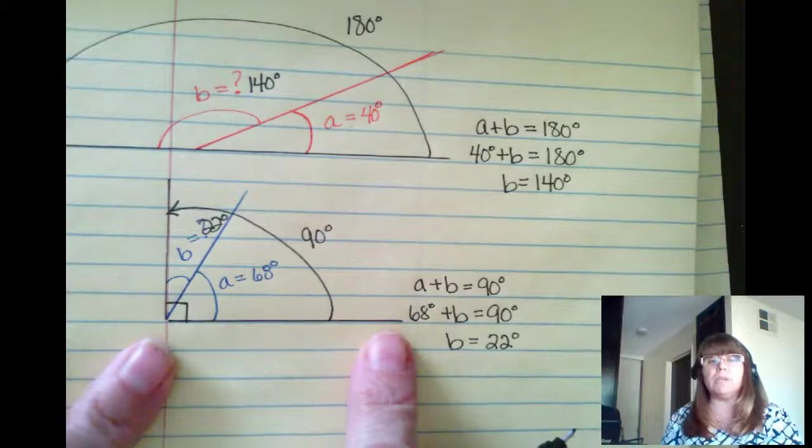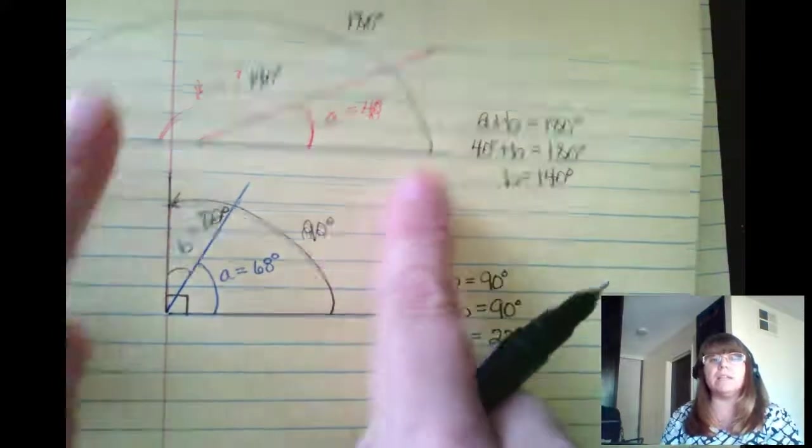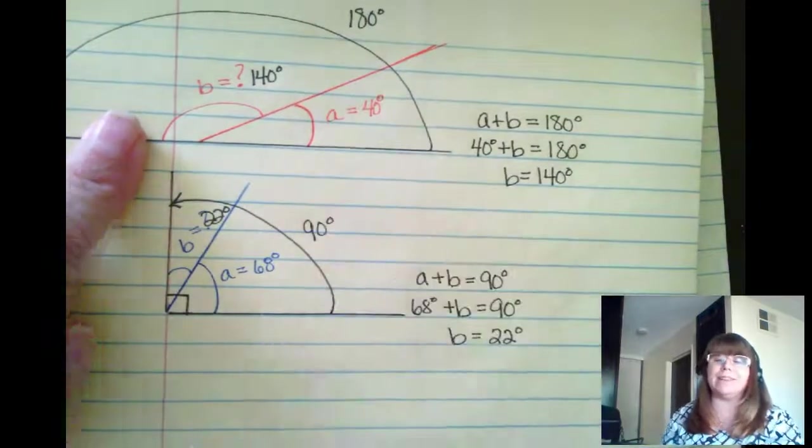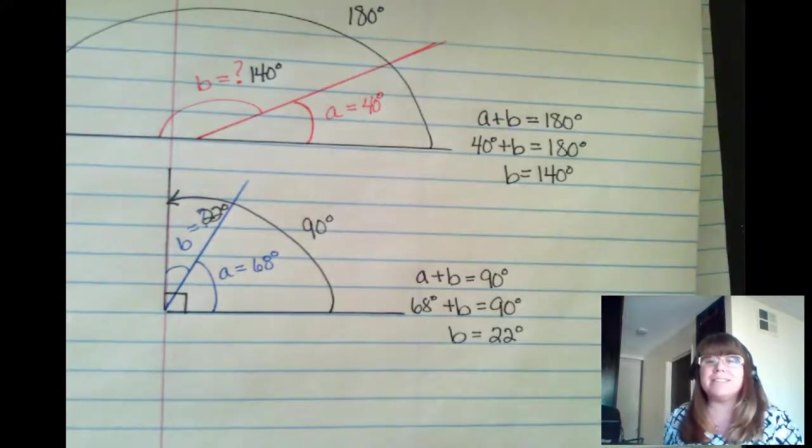You need to remember, complementary add up to 90, supplementary add up to 180. So until next lecture, be seeing you.